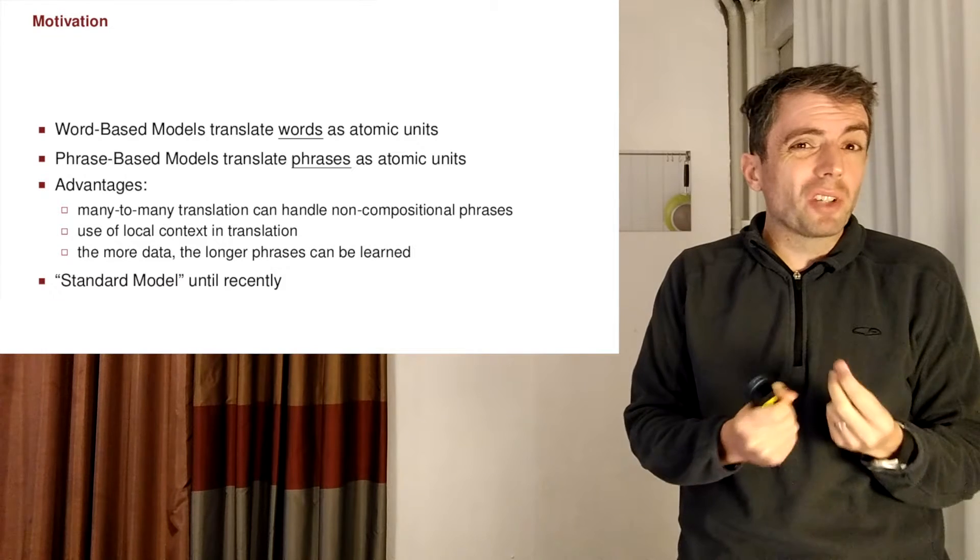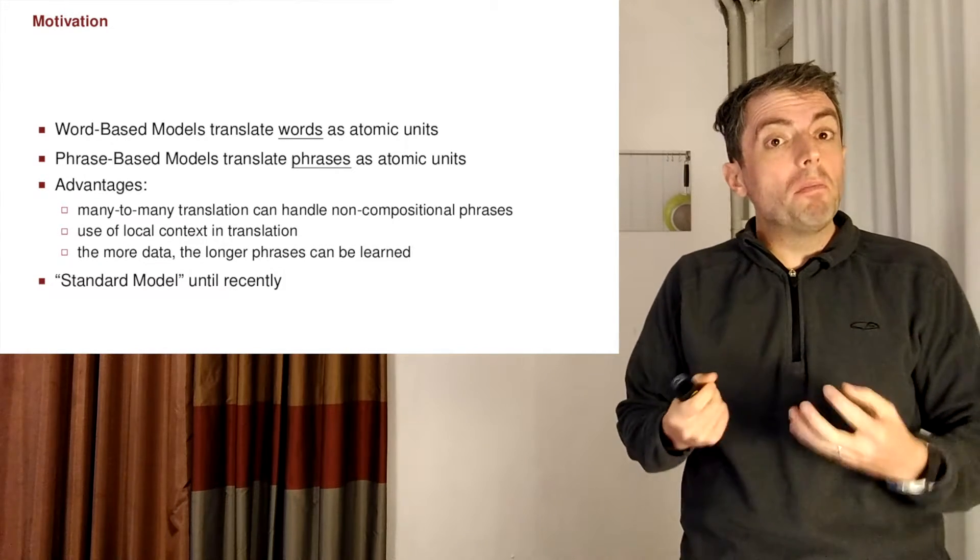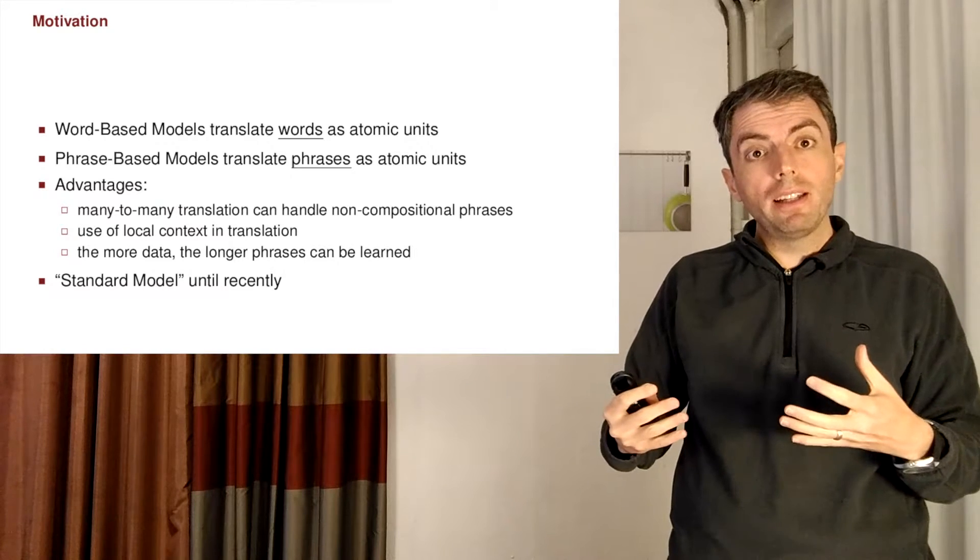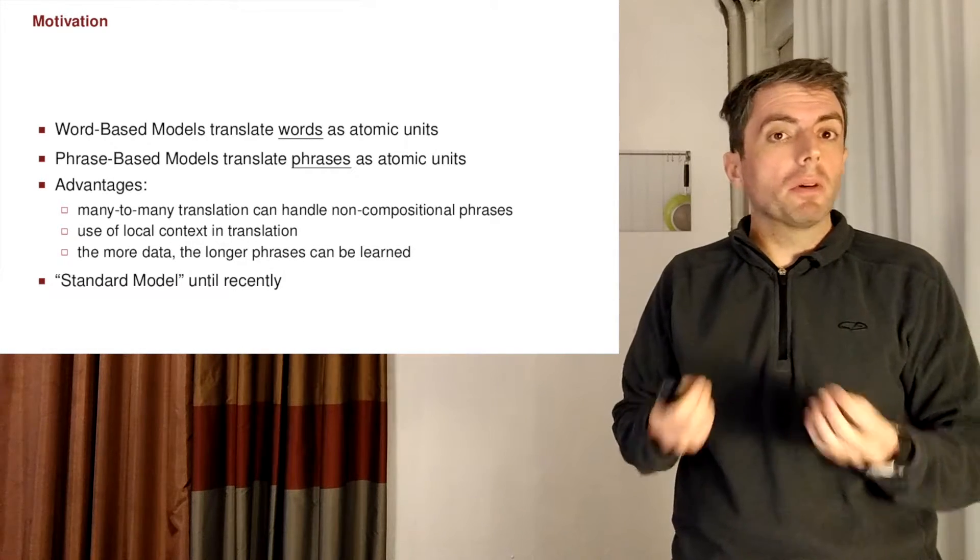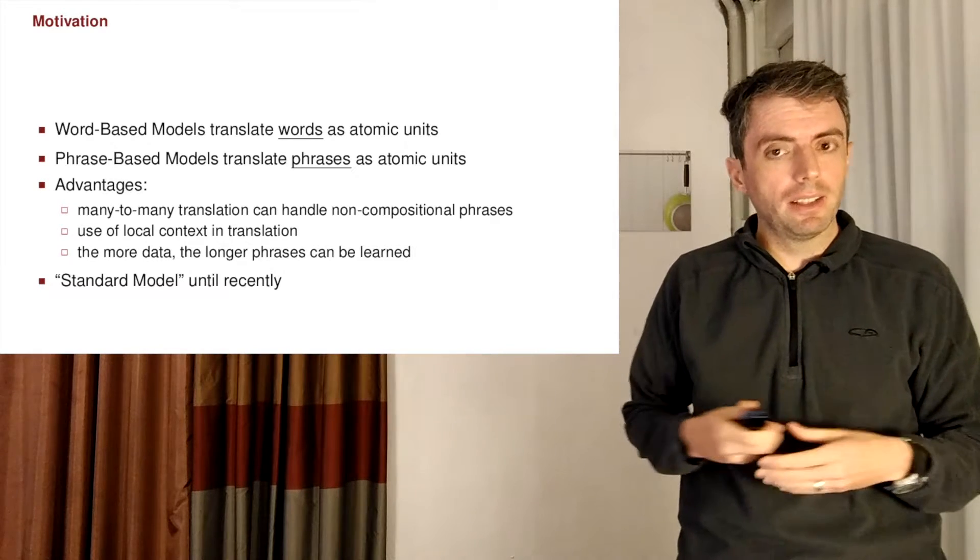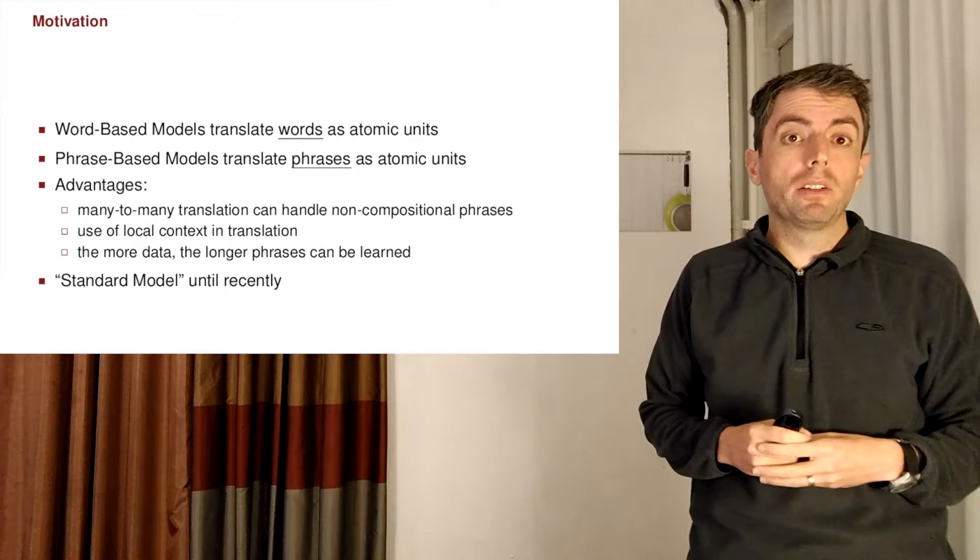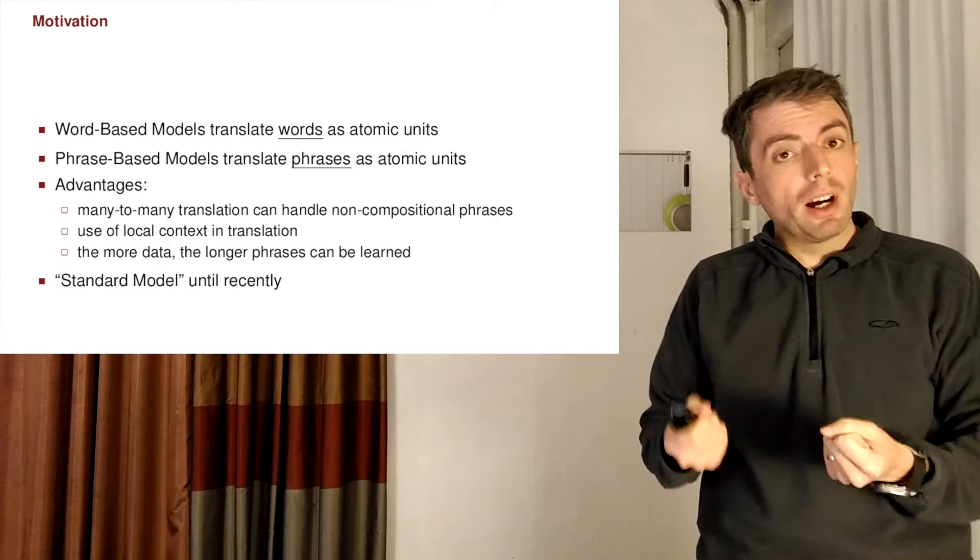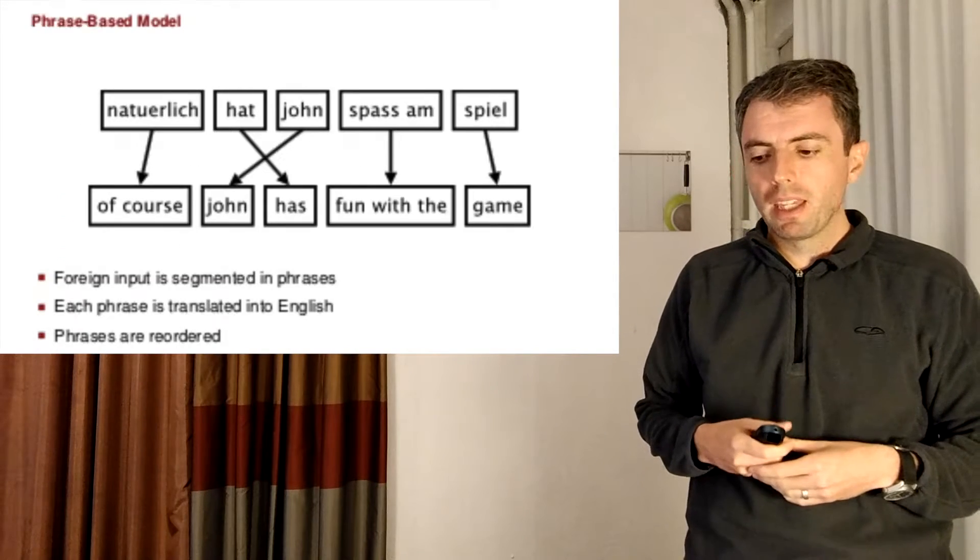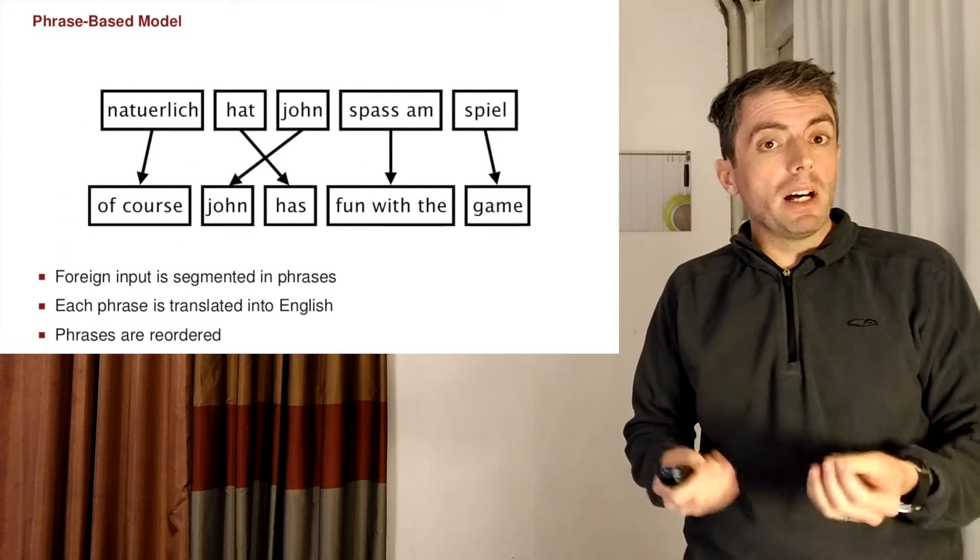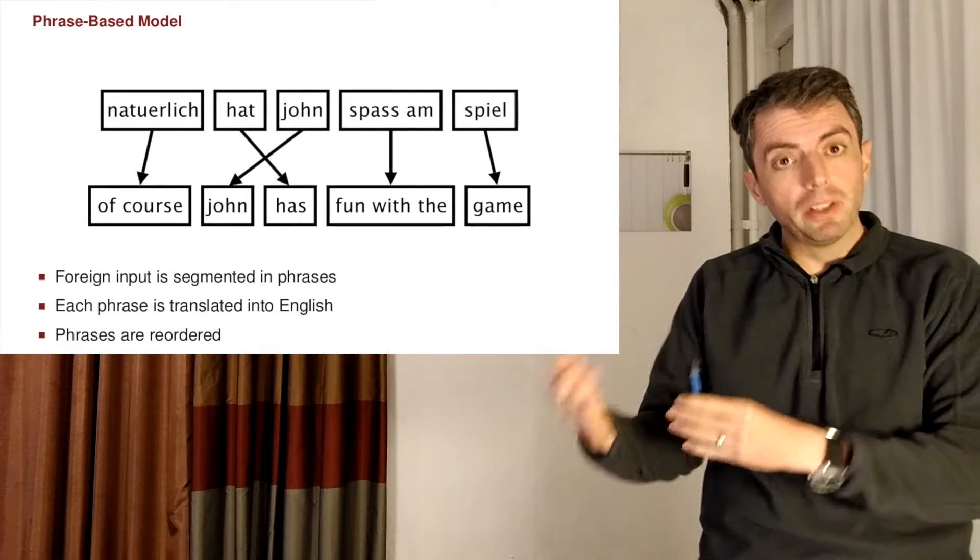So for example, some words translate differently depending on the context. And with more data, you can memorize really long phrases that you see a lot. And this allows you to create perfect translations for things that are translated frequently. Until recently, this was the standard model for machine translation. We'll talk a little bit later about the new models that have superseded it. But in any event, these models show the power of using context and we'll build on them shortly.